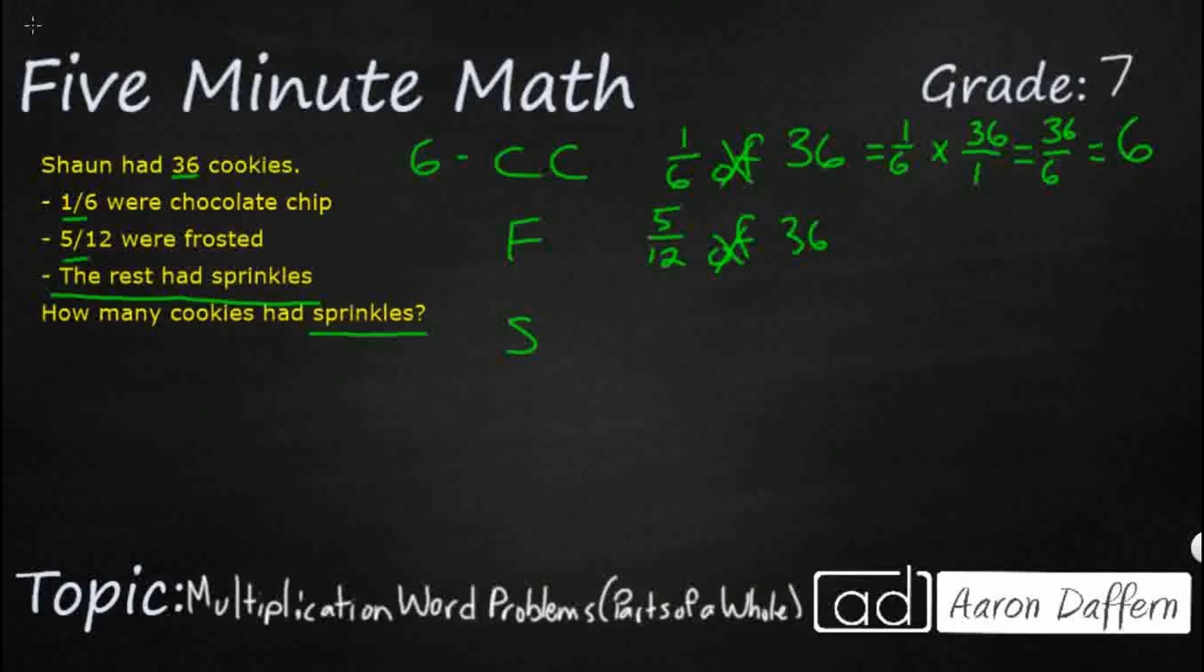I need to do the same thing for my frosted. So I'm going to do 5/12 times, let's make that a fraction, 36 over 1. And that is going to be a little bit bigger. I need to figure out what that is. 36 times 5, and that's going to be 180. So I've got 180, and that's going to be over 12.